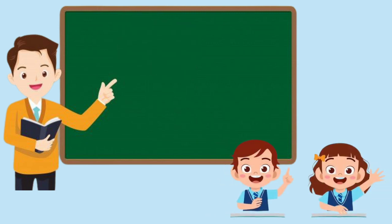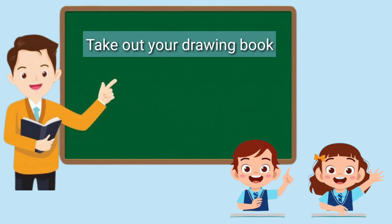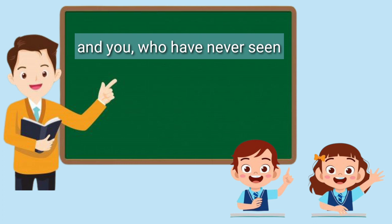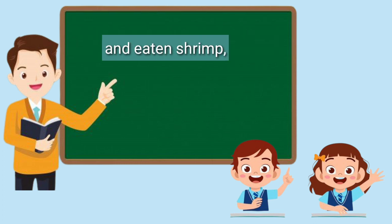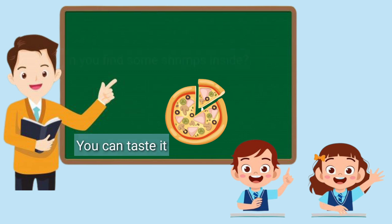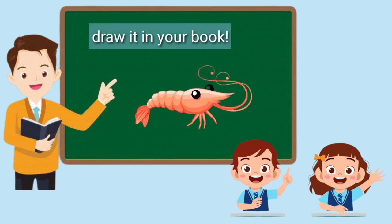Mr. Tony then said, 'Okay, who has eaten shrimp? Take out your drawing book and draw a shrimp. And you, who have never seen or eaten shrimp, here is a pizza for you. This is the shrimp — eat it and draw it in your book.'